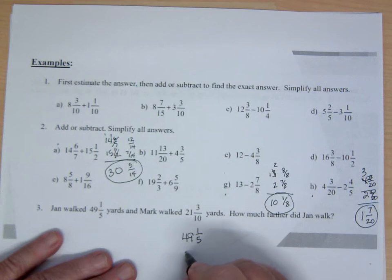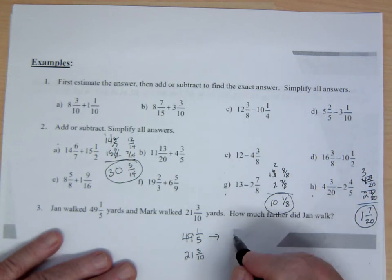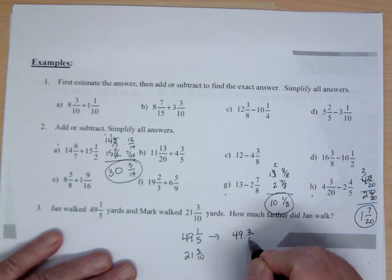Here we have a couple people walking. And you want to know the difference between the distances they walk. So we're going to have 49 and 1 fifth and we're going to be subtracting 21 and 3 over 10.